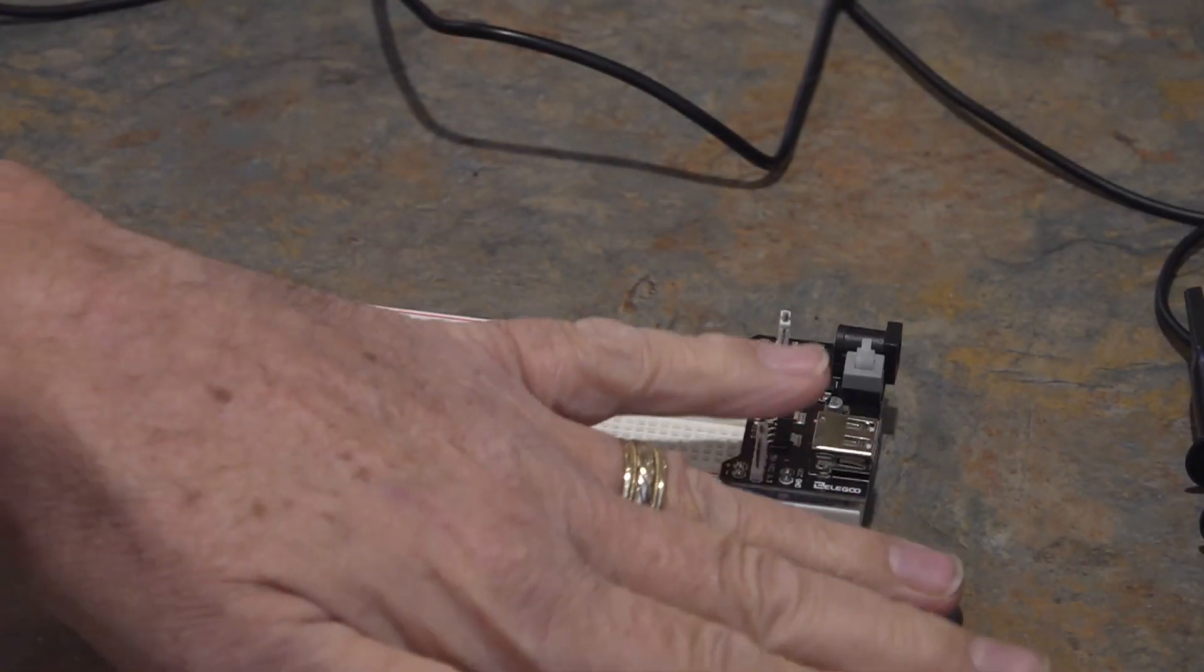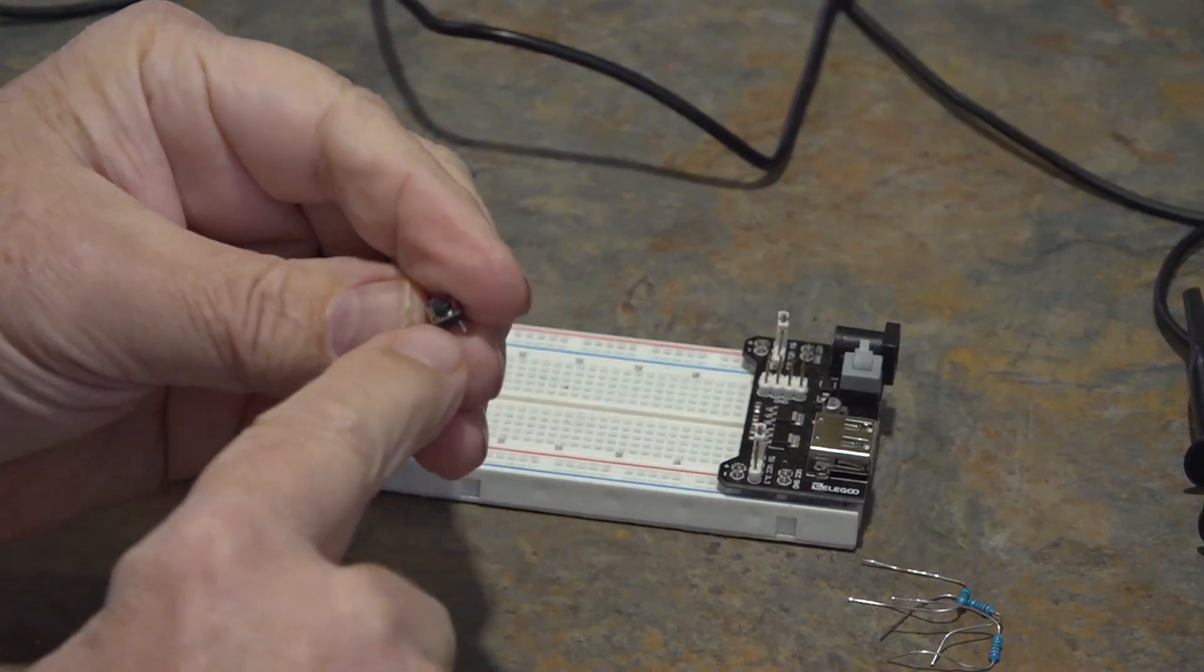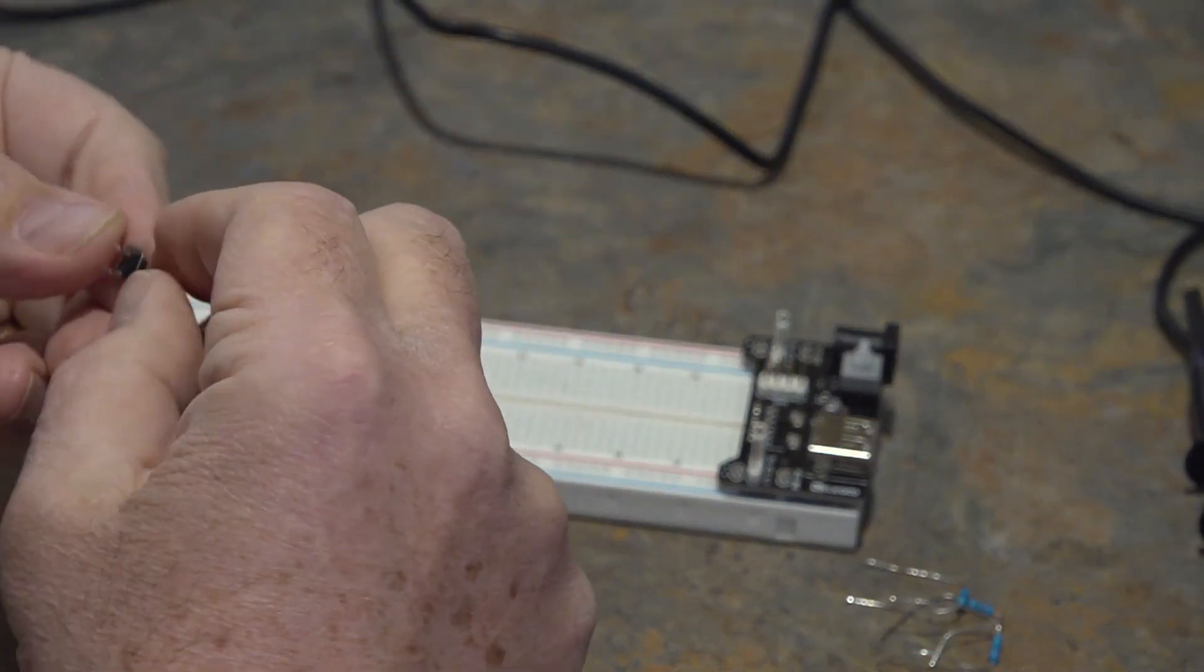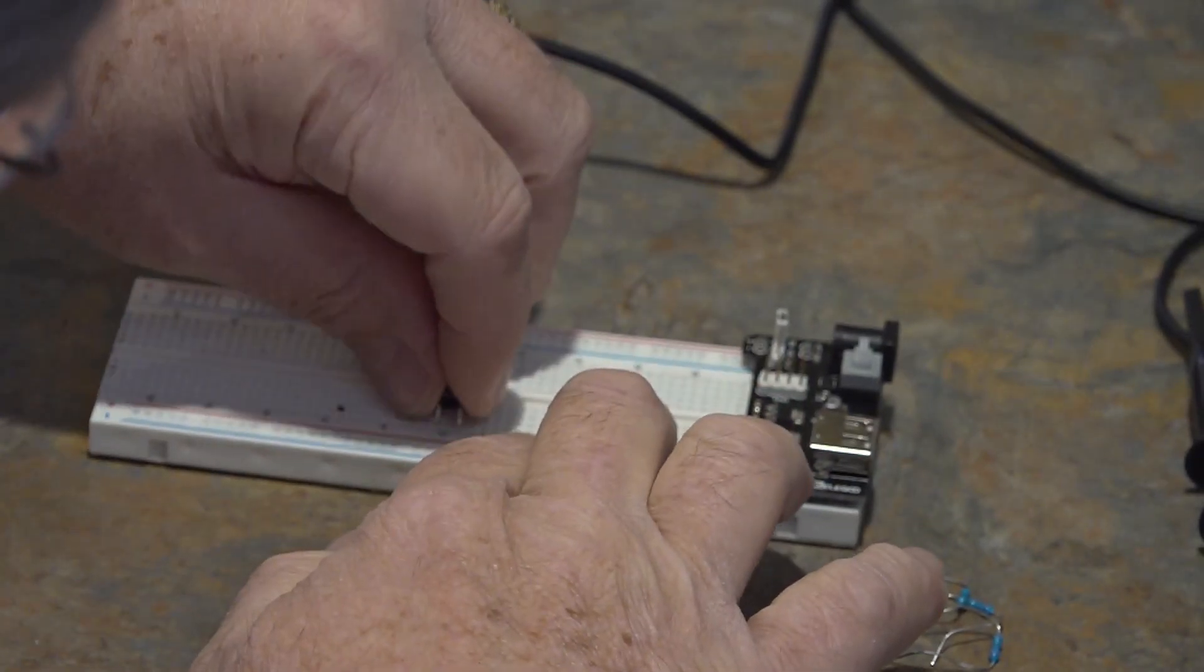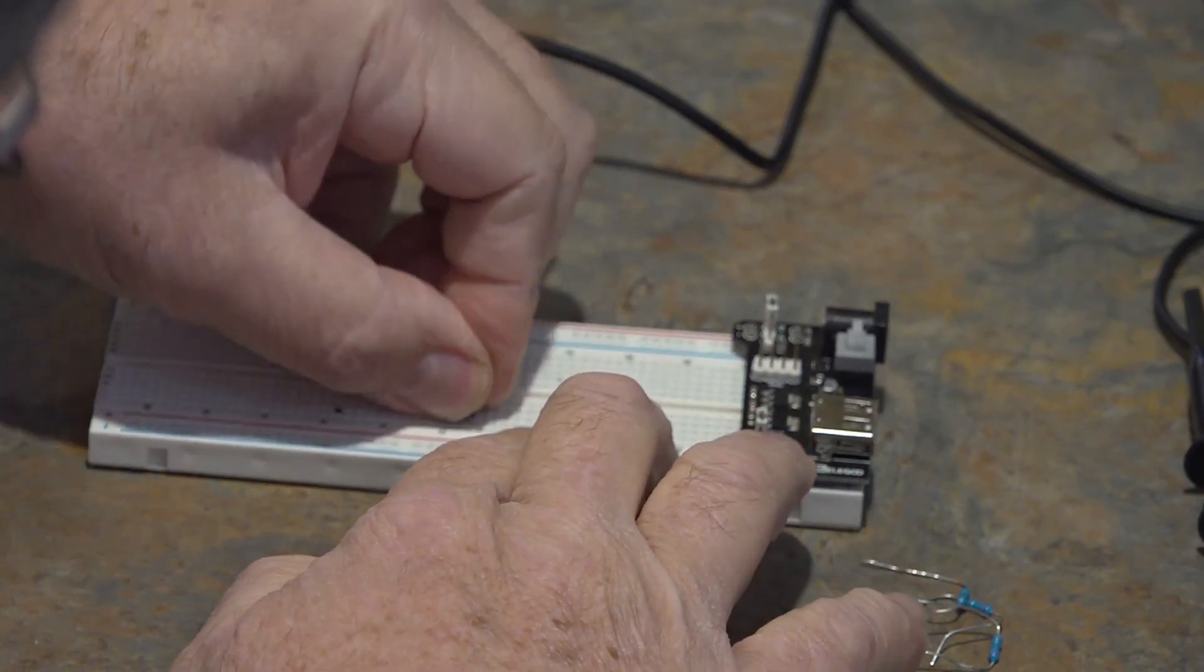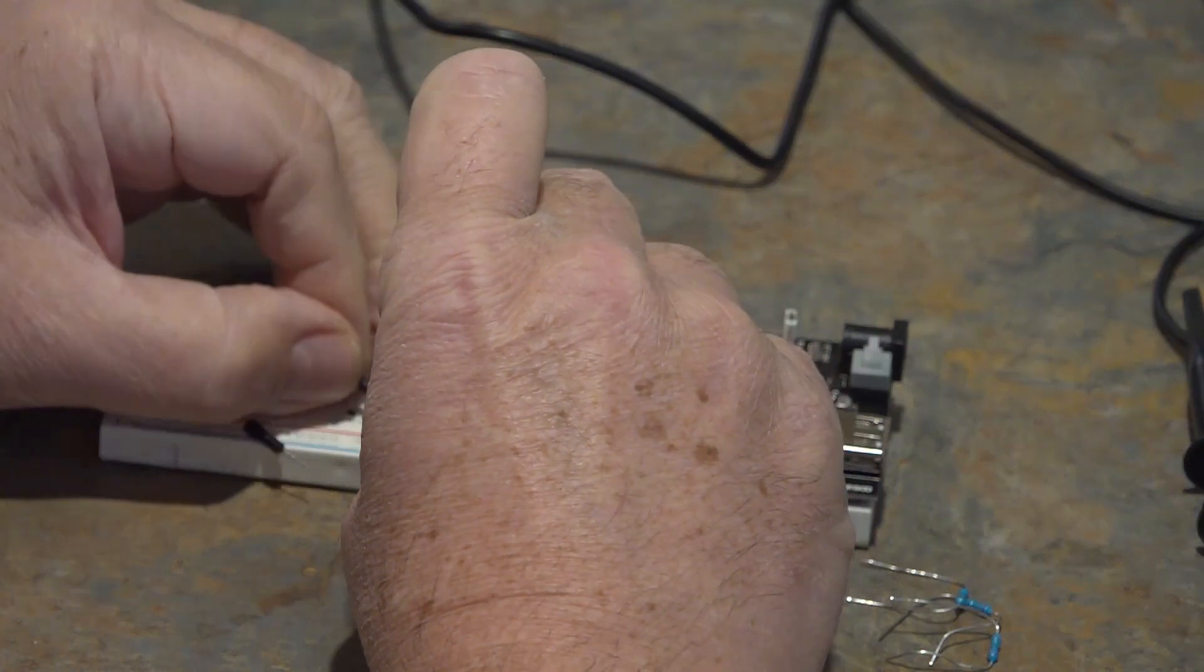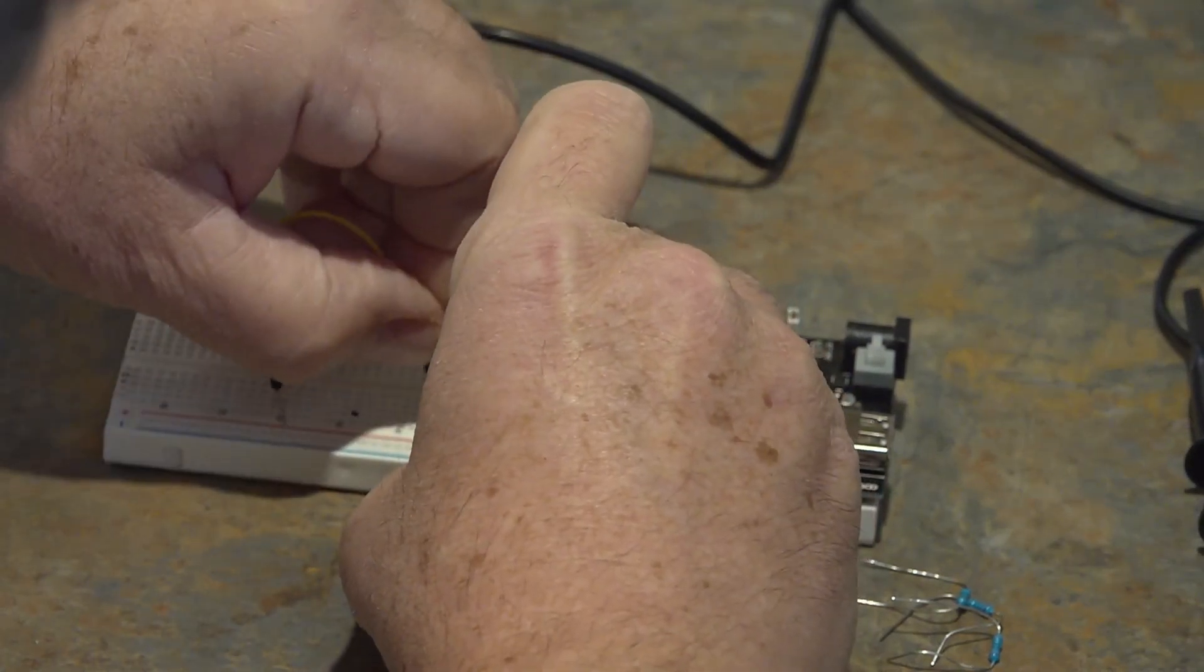First thing I want to show you is this switch. I've noticed it's only a single pole single throw switch, even though it has four legs, and it's the two closer legs that are actually the switch. What I like to do is put jumpers on them to interface to the rest of the board so that I can get to the switch relatively easily to do some of my measurements.